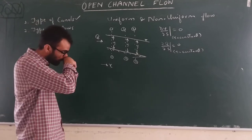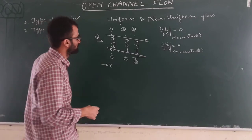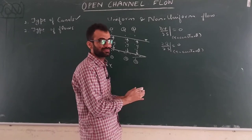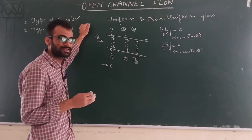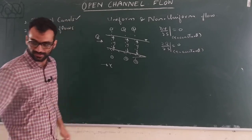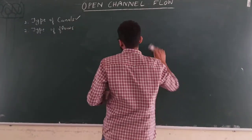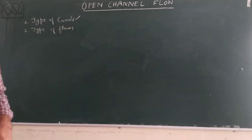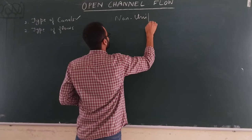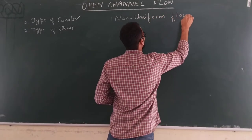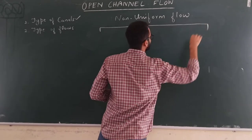For non-uniform flow, if kinematic, dynamic, or any flow properties are changing with respect to space, then you have a non-uniform flow. Importantly, in open channels we have three different categories of non-uniform flow. In pipe flow there was no such classification, but in open channel flow we have three types: gradually varied flow (GVF), rapidly varied flow (RVF), and spatially varied flow (SVF).